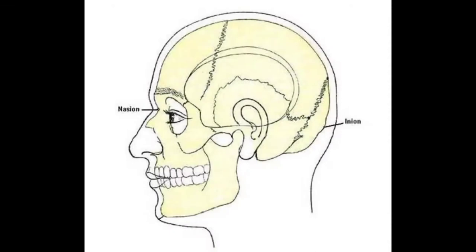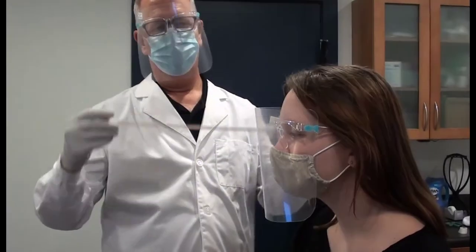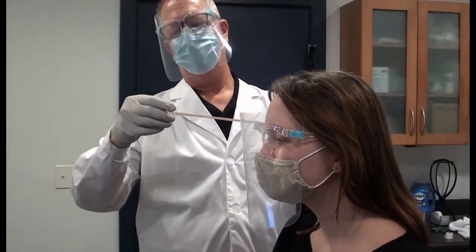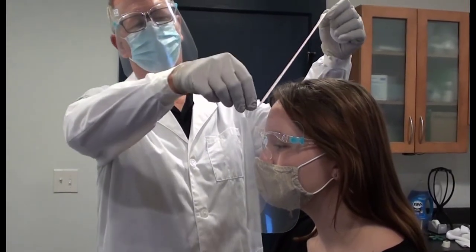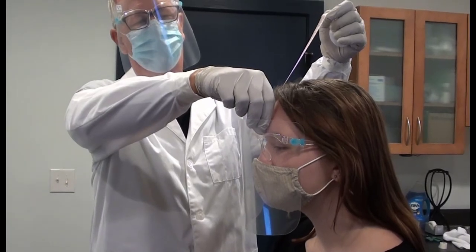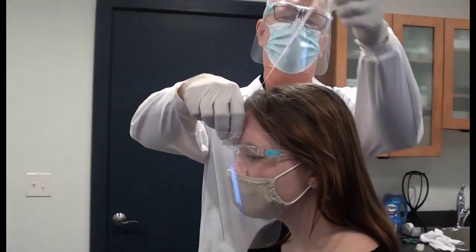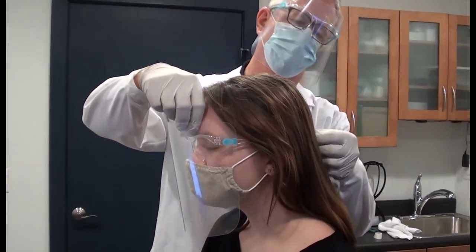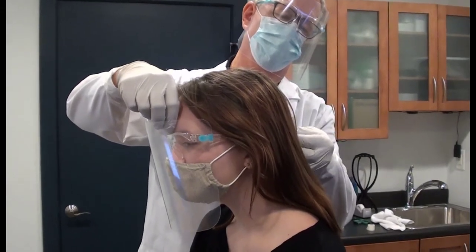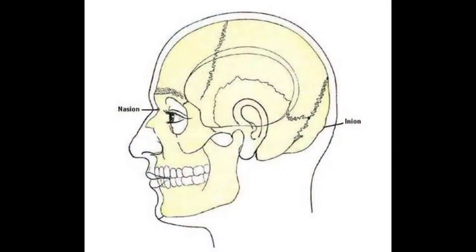Nasion is the inflection point on the bridge of the nose, just between the eyes, and inion is either the peak of the bony bump near the base of the skull, or just the base of the skull. The vertex, also known as CZ or CZ for you Canadians, is halfway between these two points at the top of the head. For example, if nasion to inion measures 36 cm, then the vertex will be 18 cm from the nasion.